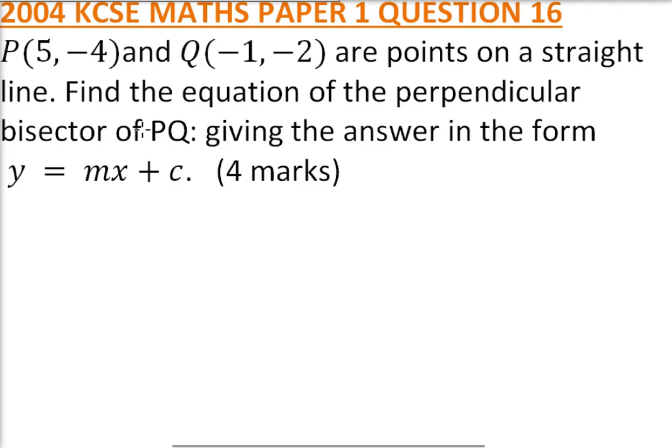So perpendicular bisector - what it means is that if we take this as our line AB with P and Q, the perpendicular bisector is a line dividing this into two. And we know perpendicular lines: the product of the gradient is equal to minus 1.